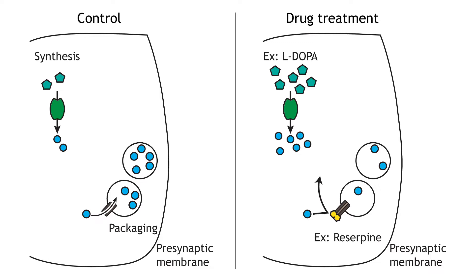As we have seen, the synapse is an incredibly complex structure, and for small-molecule neurotransmitters, the entire life cycle of the transmitter occurs in this space – synthesis, packaging, release, action, and termination. This means there are numerous targets upon which drugs and toxins can act and alter synaptic communication.